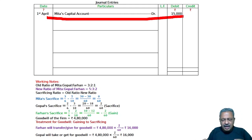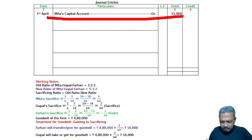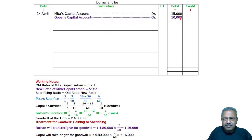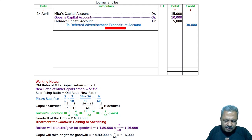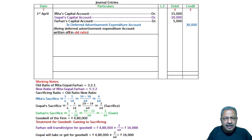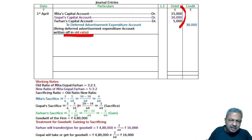Now, the deferred advertisement expenditure of 30,000 is to be written off. Mitha's capital account debited, Gopal's capital account debited, Farhan's capital account debited — to Advertisement Suspense account 30,000. Being deferred advertisement expenditure written off in old ratio.